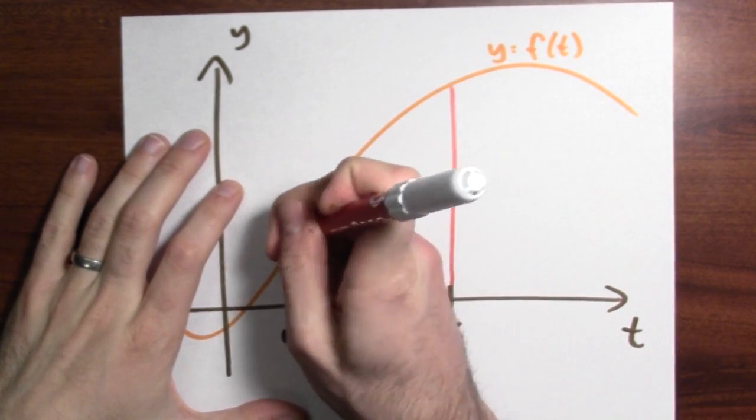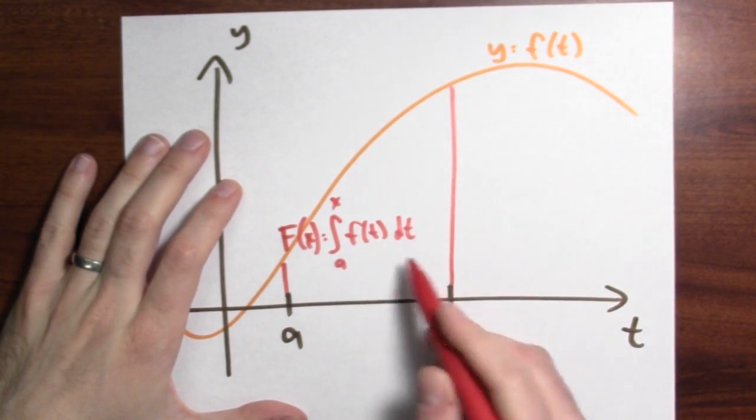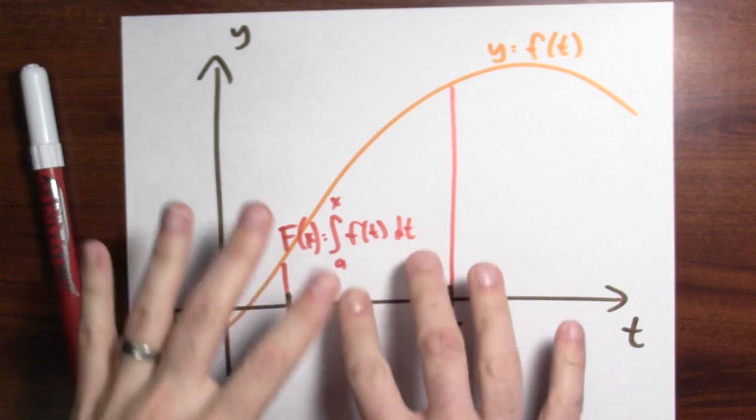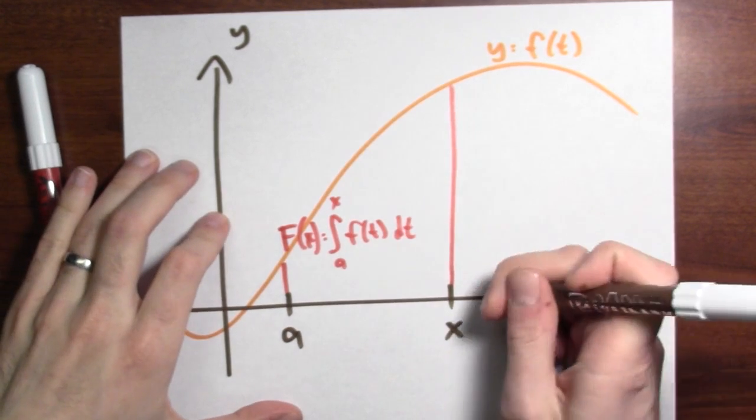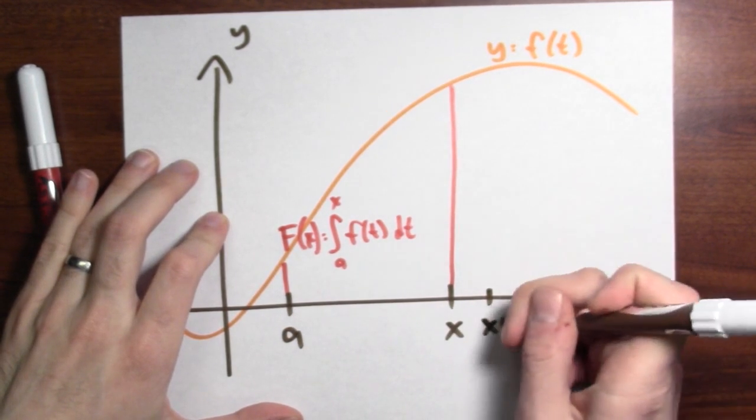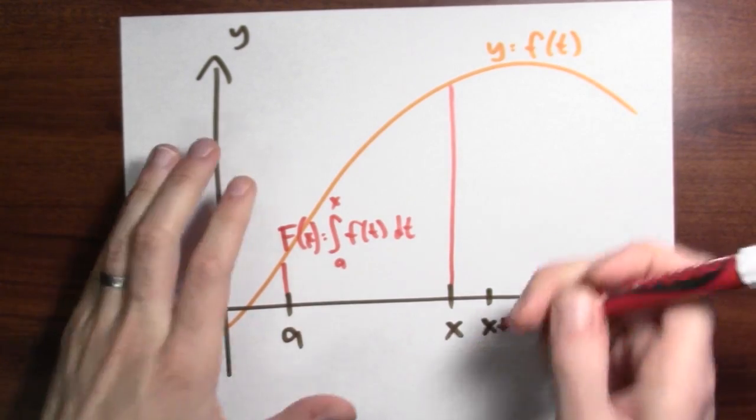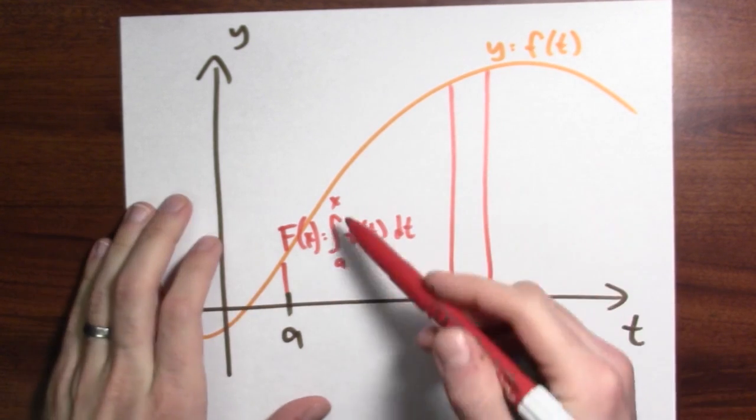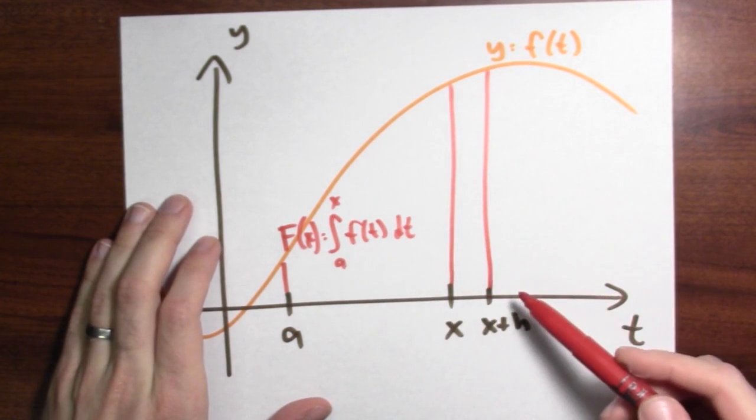Now, what's the derivative of the accumulation function? Well, I've got the accumulation function, F(x) equals the integral from a to x of f(t) dt. And I don't know how that changes when x changes. So let's make a small change in x. Let's go from x to x plus h. And then ask, how does the area in this region compare to the area in this much larger region?